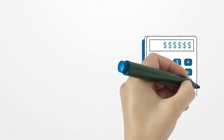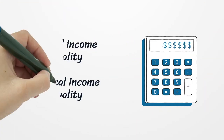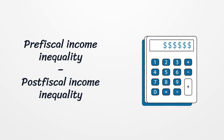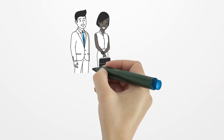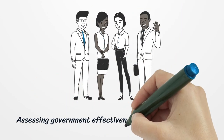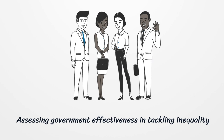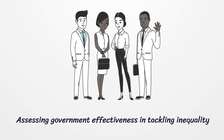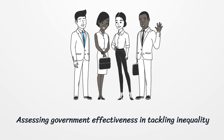This indicator reports on the redistributive impact of fiscal policy, which is the difference between pre-fiscal and post-fiscal income inequality. The inclusion of this indicator is an important step toward the creation of a global standard for assessing government effectiveness in truly tackling inequality.